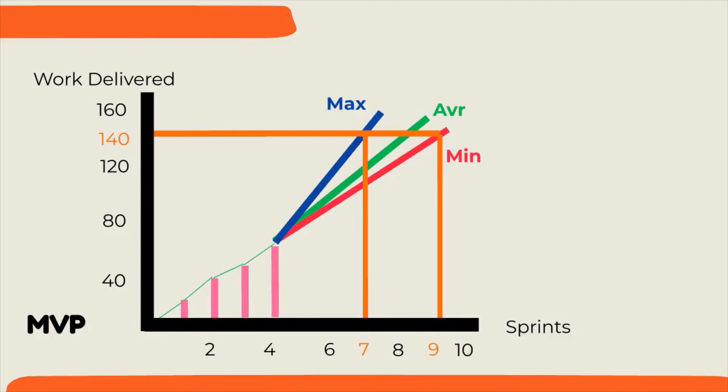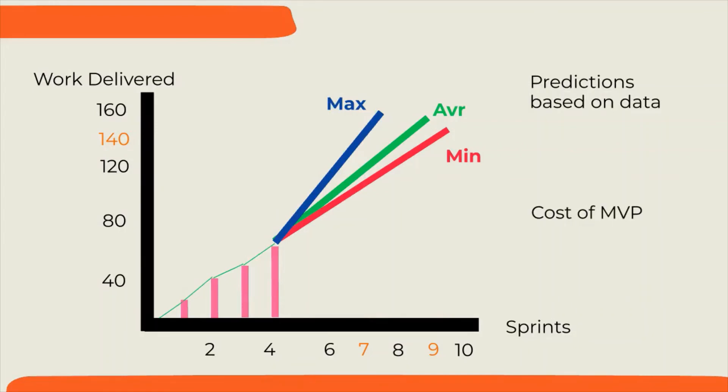An important point to inform your stakeholders: tell them this is not exact science but predictions. The more you work on your product, the more data you get, and the more precise you can be. Based on this, product owner can give an estimation of budget for minimum viable product.